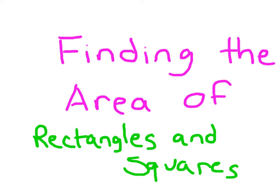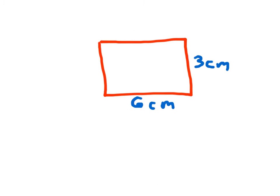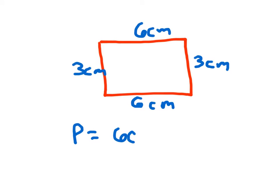Let's learn how to find the area of rectangles and squares. Before we had learned about perimeter, which is the distance around a figure, so we label all of those unlabeled sides first, and then we go ahead and add those. So we're talking about going that distance around the figure.